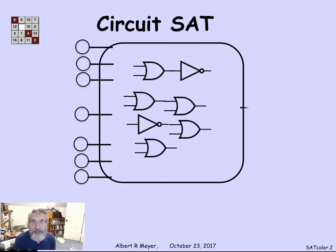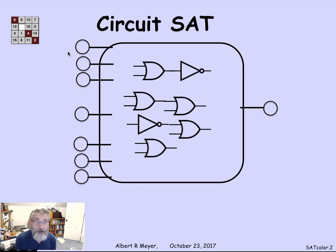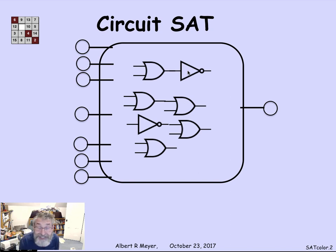Let's imagine that we have some Boolean circuit — a propositional circuit. It's built out of little gates: an OR gate and an inverter, a NOT gate. There's an output and a bunch of inputs. It's enough to have ORs and NOTs, because I can express all other kinds of gates — like ANDs and implies gates — in terms of just these two primitives, OR and NOT.